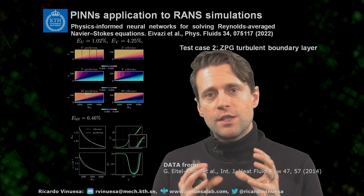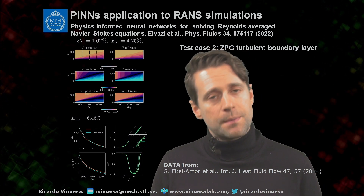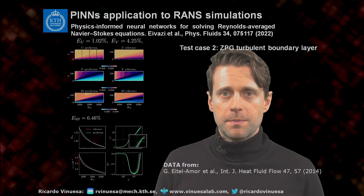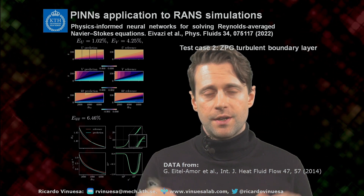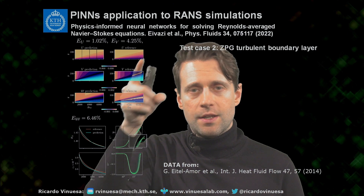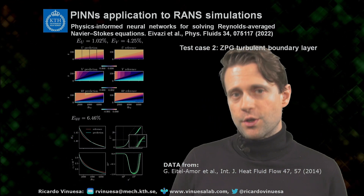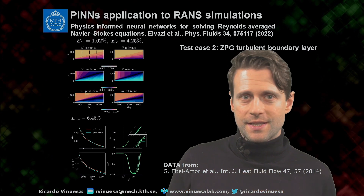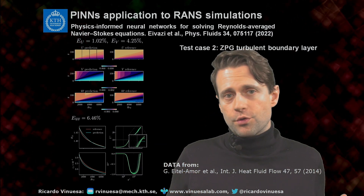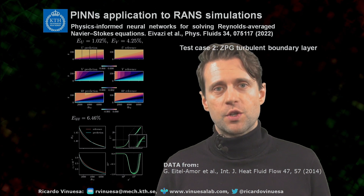The second case is a zero pressure gradient turbulent boundary layer. The Reynolds number goes up to Re_theta of 8000 based on momentum thickness — quite a high Reynolds number. We can see that the mean gets 1% error, so the boundary layer development is very well characterized. Even when looking at the Reynolds stresses, the performance is actually pretty good — very small deviations, certainly much better than what you would get with an industrial simulation, and being able to reproduce the anisotropy that you will have in turbulent boundary layers.